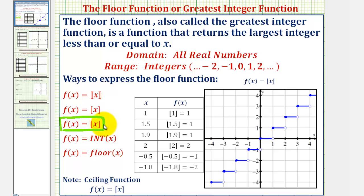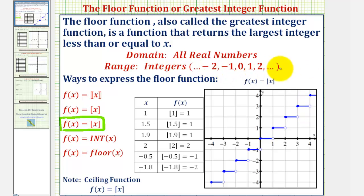In contrast, the ceiling function uses a similar notation where we have a pair of vertical bars, but the upper part of the vertical bars are turned in rather than the bottom. Over here on the right, we see the graph of the basic floor function. Notice how the floor function is discontinuous, because the function values will always be integers.